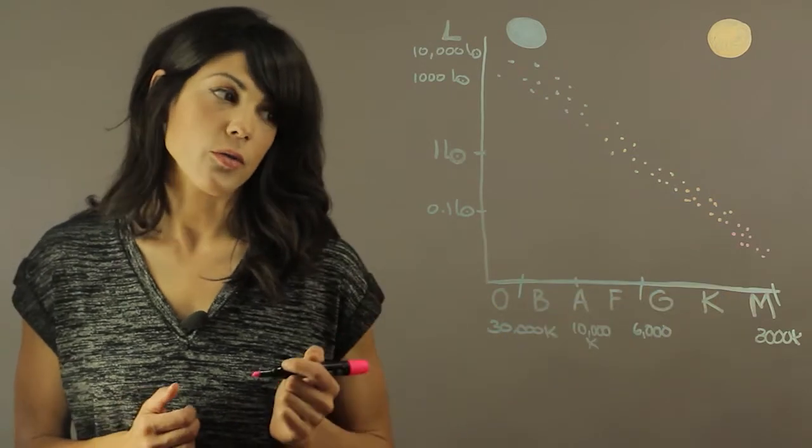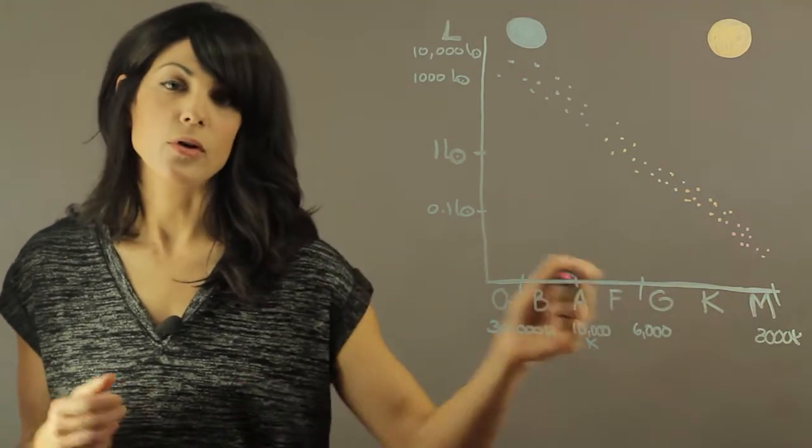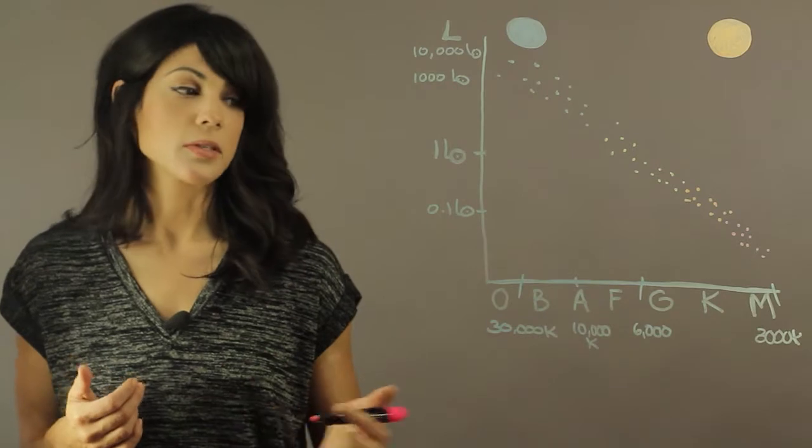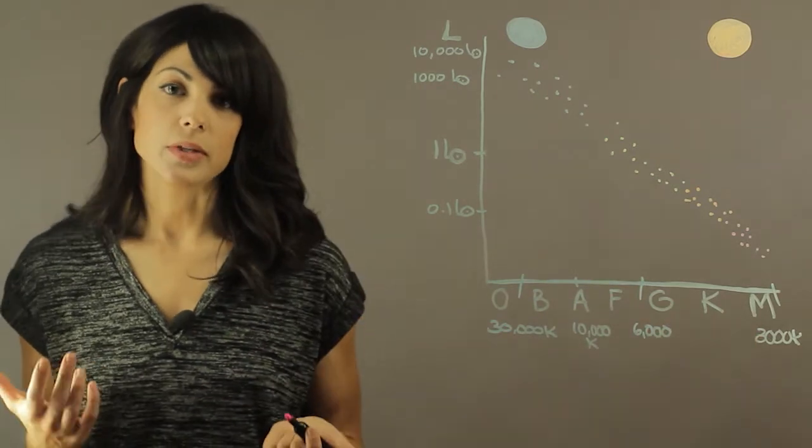And then when you go to the other end of the axis, you have the colder stars, the K, the M's, and this is about 3,000 degrees Kelvin.